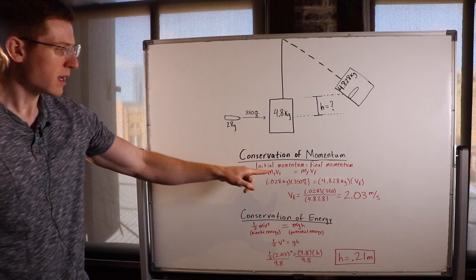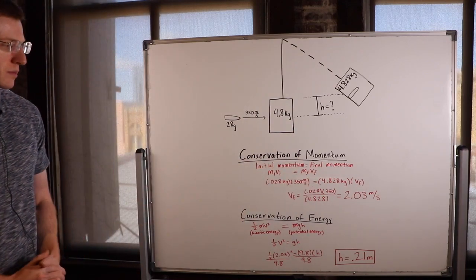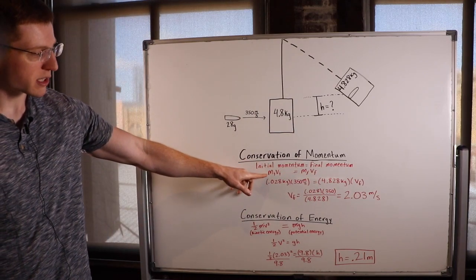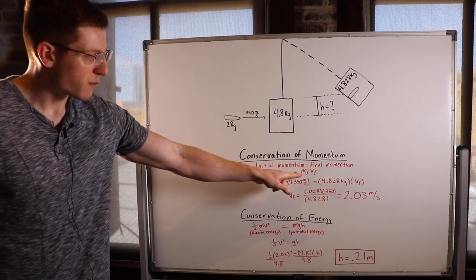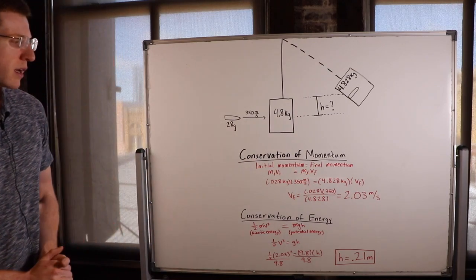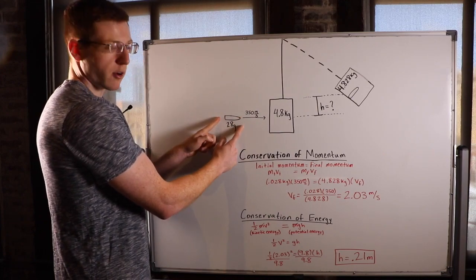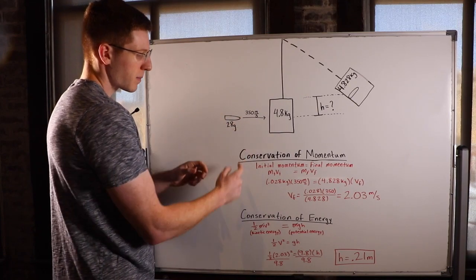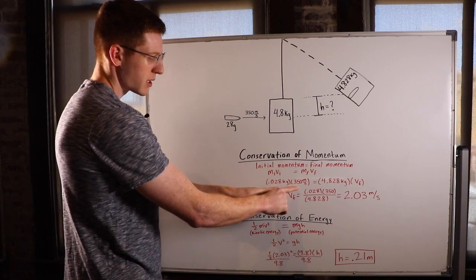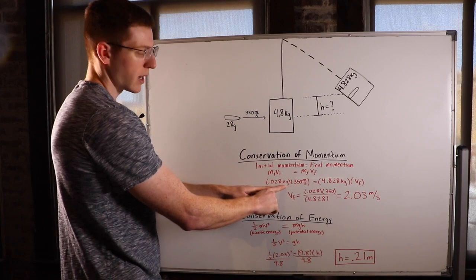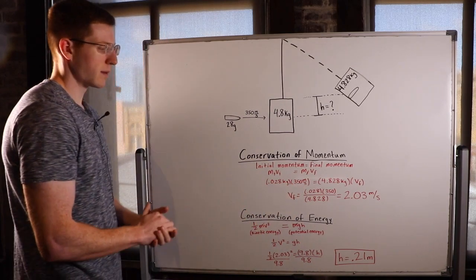And it says initial momentum is equal to the final momentum. So in other words, the initial mass times the initial velocity equals the final mass times the final velocity. Well, we know initially all we had momentum in was this bullet. It was just the 28 gram bullet moving. So we know that was our initial momentum, the mass of the bullet in kilograms times the velocity of the bullet initially.